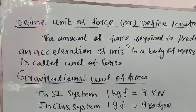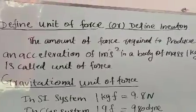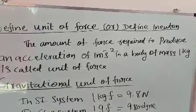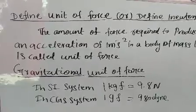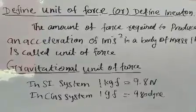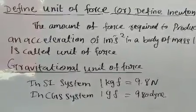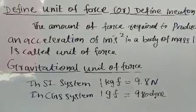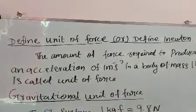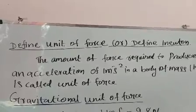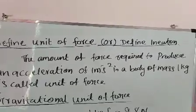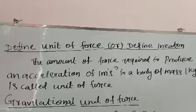The next question is: define the unit of force or define 1 Newton. The amount of force required to produce an acceleration of 1 m·s⁻² in a body of mass 1 kilogram is called the unit of force, i.e., 1 Newton. The gravitational unit of force in the SI system is 1 kilogram-force = 9.8 N. In the CGS system, 1 gram-force = 9.8 Dyne. Also, 1 Dyne is the amount of force required to produce an acceleration of 1 cm·s⁻² in a body of mass 1 gram.